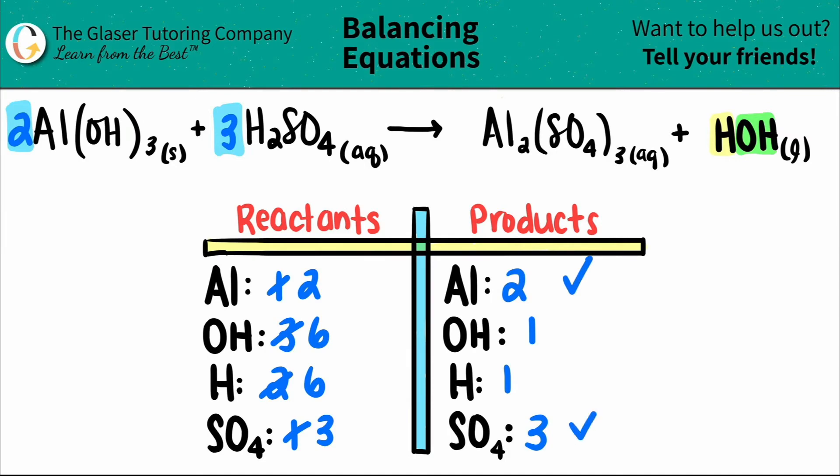Okay. So the aluminums are balanced. The sulfates are balanced. And for both of the H's and the OH's, I have a six on one side and I have a one on the other side. Doesn't matter which one you balance first, let's maybe do the hydrogen.